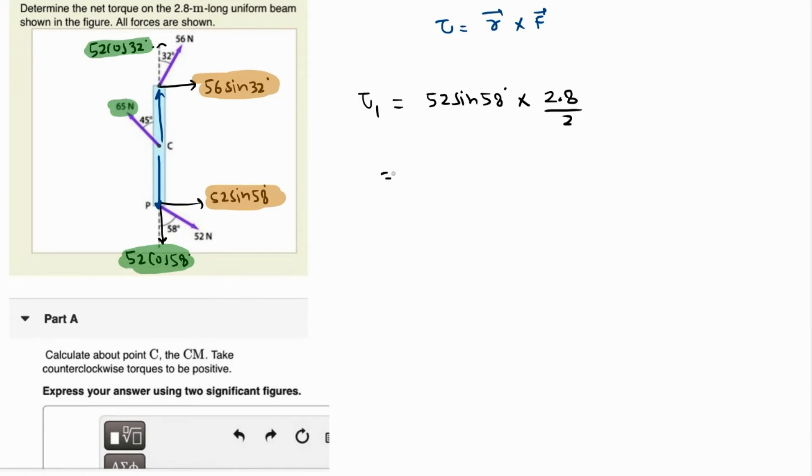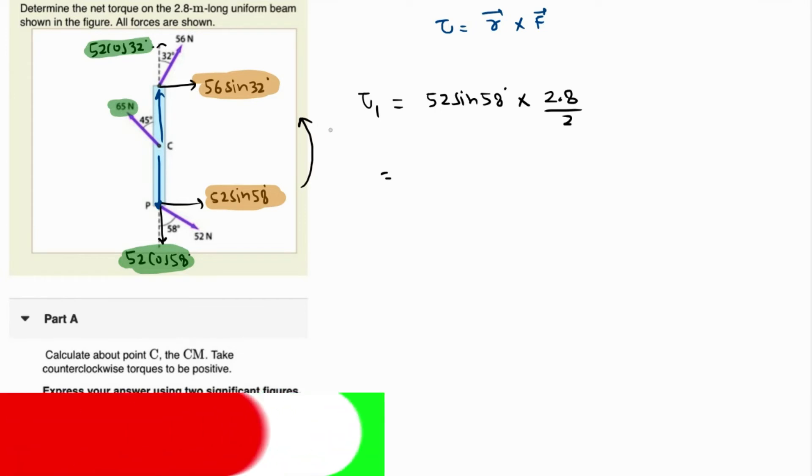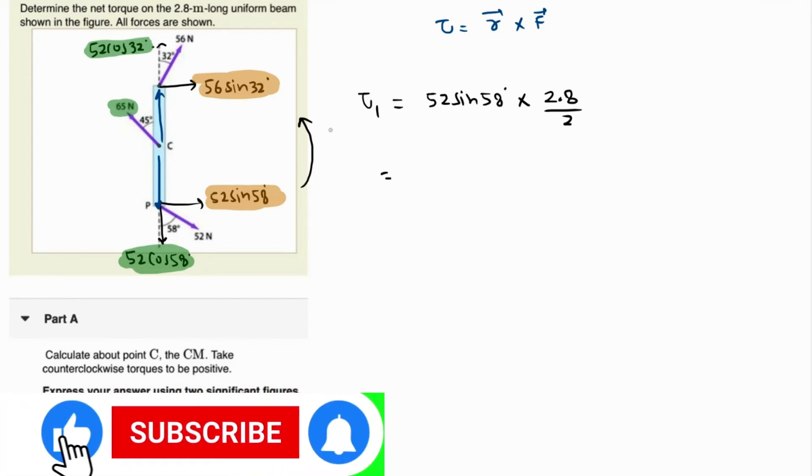Let me just grab my calculator. We have to take counterclockwise direction as positive. This is trying to rotate it in counterclockwise sense. So 52 times 1.4 times sine of 58 is coming as 61.74 newton meters.